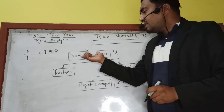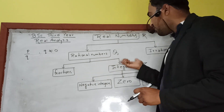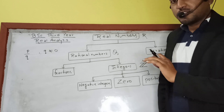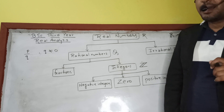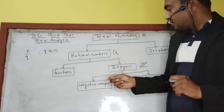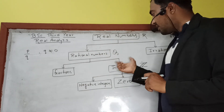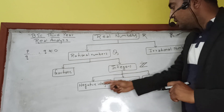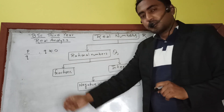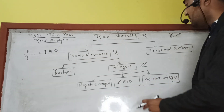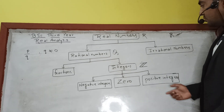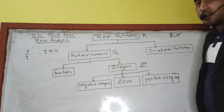Rational numbers are again categorized into two parts: fractions and integers. For example, 5/2 and 1/3 are fractions. But 5/1, which equals 5, is an integer. Integers are further categorized into three types: negative integers (like -1, -2, -3...), zero, and positive integers (1, 2, 3...). This completes the classification. Please study along and this will be helpful.